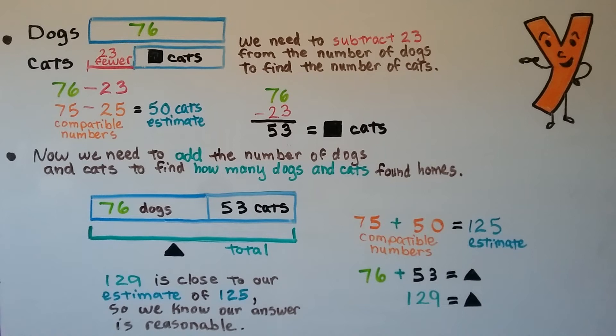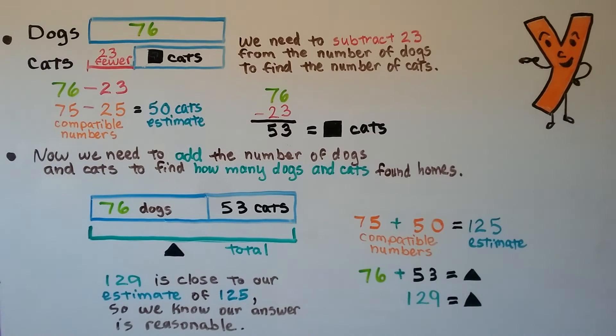To know an answer is reasonable, we make an estimate of what the sum or difference is and see if the sum or difference is close to our estimate.